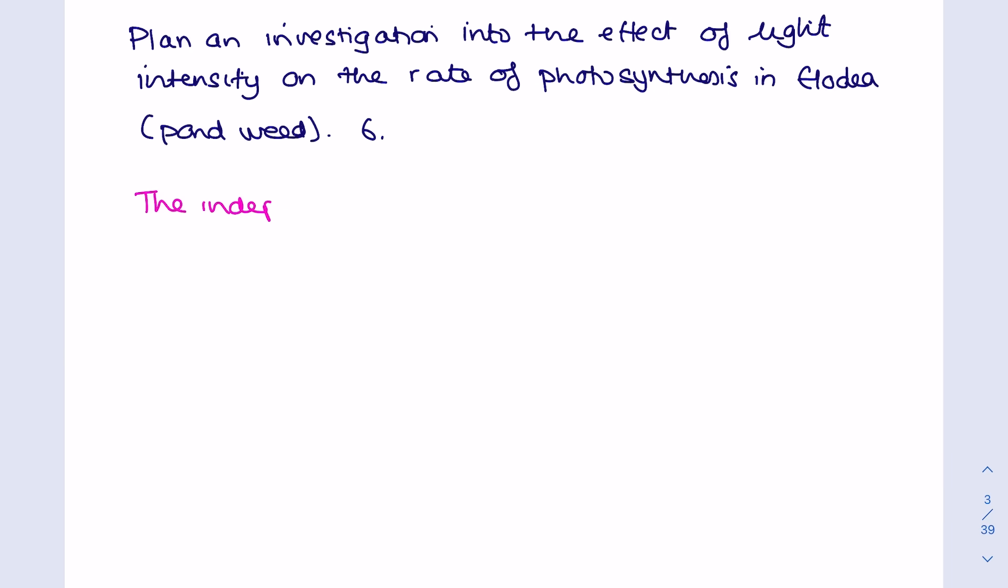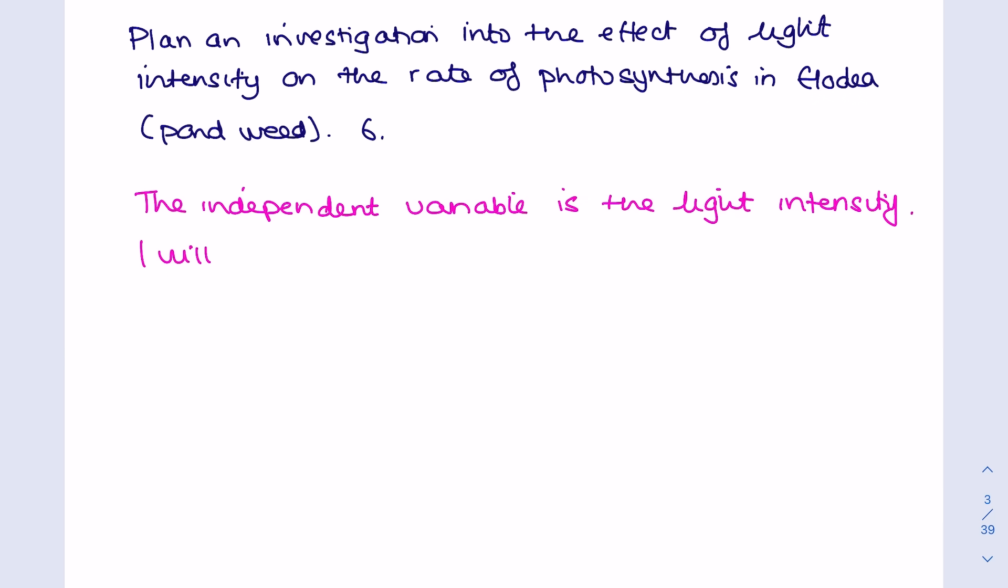The independent variable, so what is it I'm changing, is the light intensity. And because I'm doing this in a school lab setting it needs to be nice and simple. So to change that light intensity I'm just going to use a lamp held at different distances away from the pondweed. And here's the range that I mentioned, so e.g. 10 centimeters, 20 centimeters, 30 centimeters, 40 centimeters.